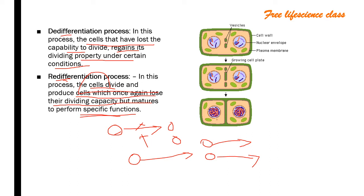This is a simple diagram of division of a cell to give two new cells showing cell plate formation. When a cell divides, first the cellular contents double, then a cell plate develops, and after cell plate formation the cell divides into two new cells.